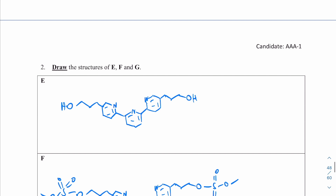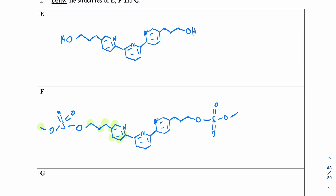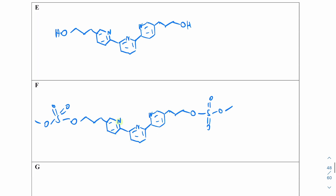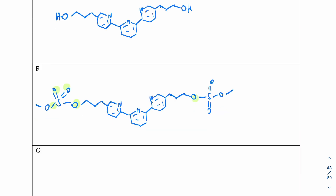Let's double-check: counting carbons — 1 through 23 — wonderful. Counting hydrogens — 27 — also wonderful. Counting oxygens: 1 through 8, which is not right. So this cannot be the correct compound, and that's why you always double-check when you are given a molecular formula, because I indeed made a mistake.